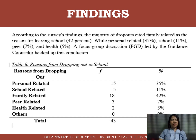According to the survey's findings, the majority of dropouts cited family-related issues as the reason for leaving school, with 42%. A focus group discussion (FGD) led by the guidance counselor backed up this conclusion.